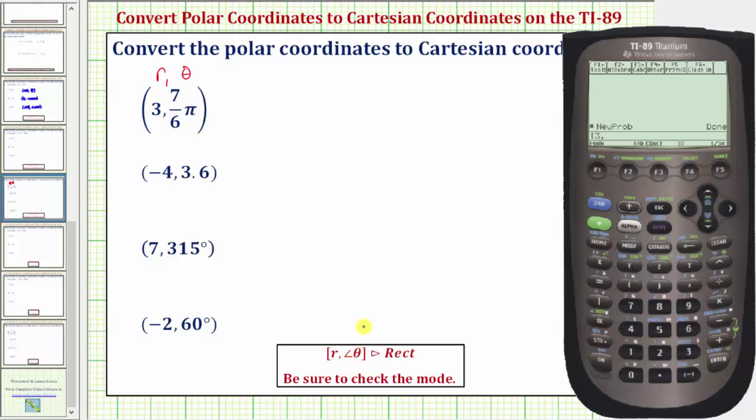Now we need to enter this angle symbol before we enter seven six pi. So let's find this symbol in the catalog. We'll press catalog, go back up to the A's. Notice how there's an A above the equal sign, so we'll press equals and then scroll up further to find the angle symbol. Here's the angle symbol, so we press enter.